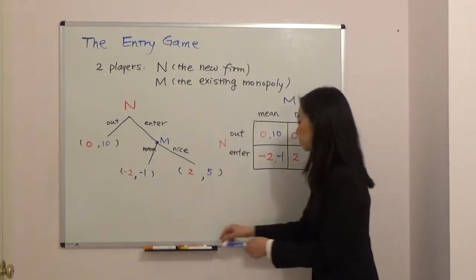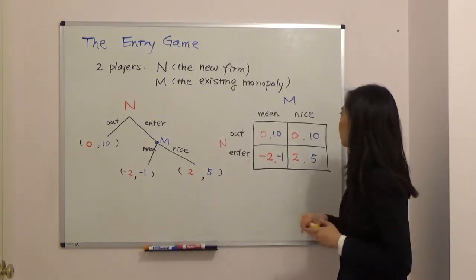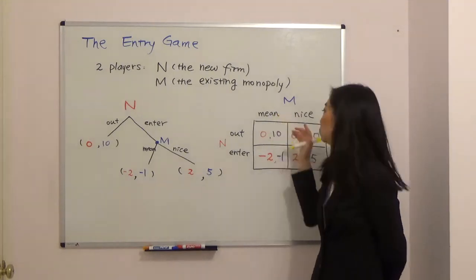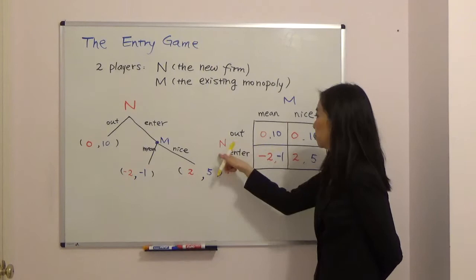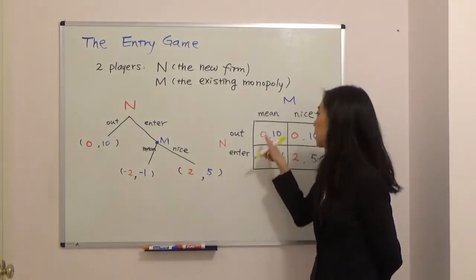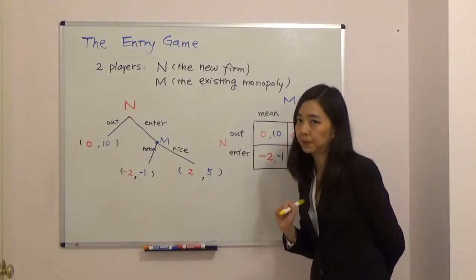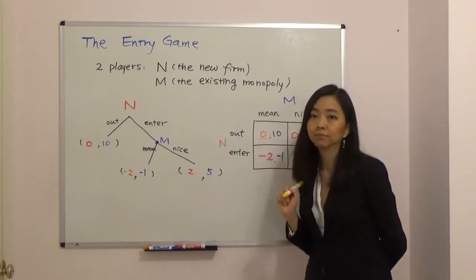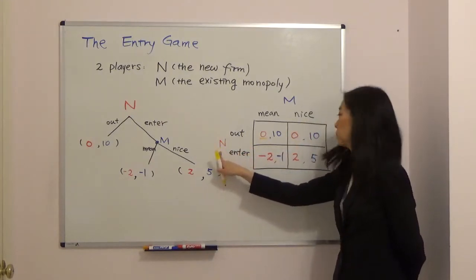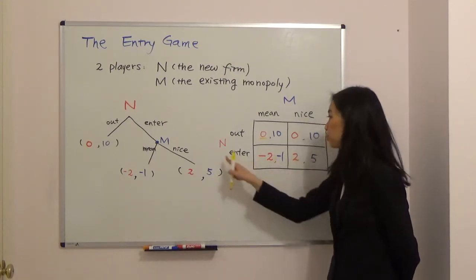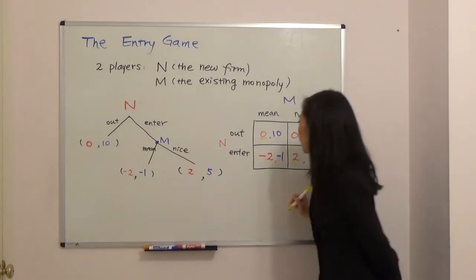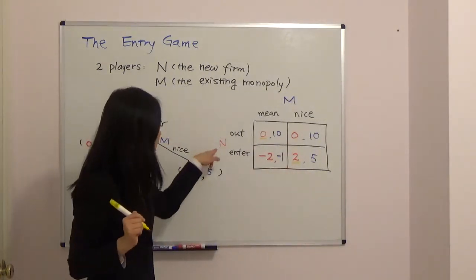We use the best response method. Given that the monopoly chooses to play mean, we look at the left column. If the new firm stays out it gets zero profit, but if it enters it suffers a two million dollar loss, and zero is better than negative two. So given that the monopoly plays mean, the new firm will choose to stay out. Given that the monopoly plays nice, we look at the right column — the new firm would choose to enter because entering gives two million dollar profit, and two is better than zero.